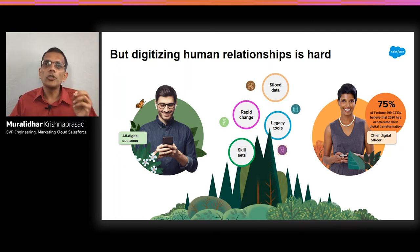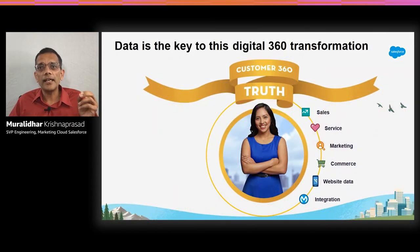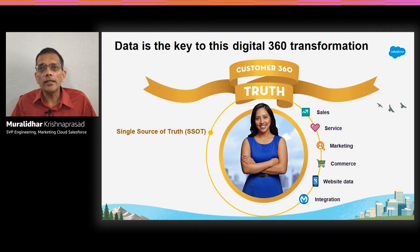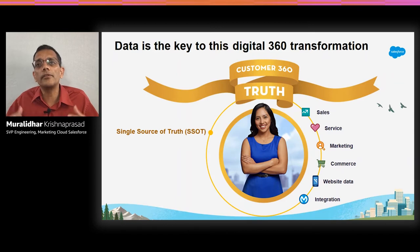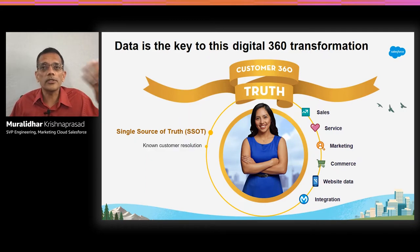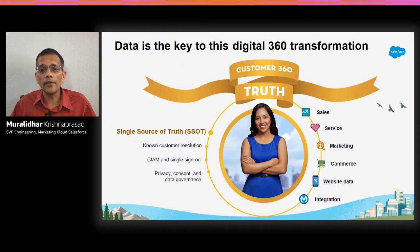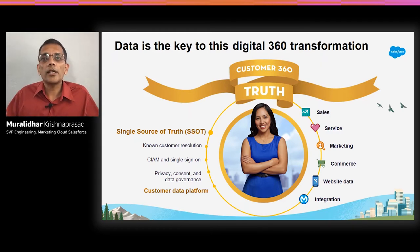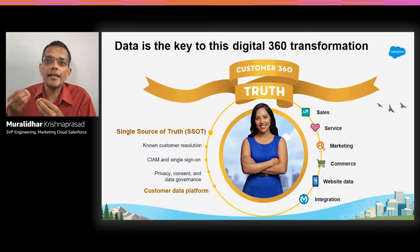Key to really digitizing this human relationship, we feel, is data. As a customer, they're going to have touch points with your company through all of these things — whether it's sales, service, marketing, commerce, your back-end systems. In Salesforce, we call this the single source of truth. You want to bring all of that data, all that customer information, all the events together into a single system of truth. It needs to first resolve the customers, because customer information may be represented differently across all of these systems. You need single sign-on through all these systems to link them together, obviously privacy concern and governance, but more than all of it, you need a data platform which can actually pull all this data together so you can reason, analyze, and act on it.